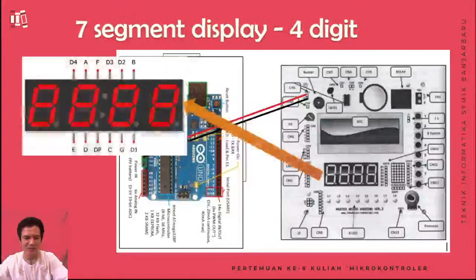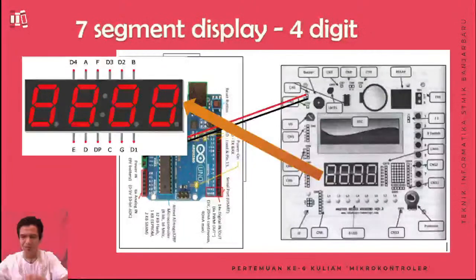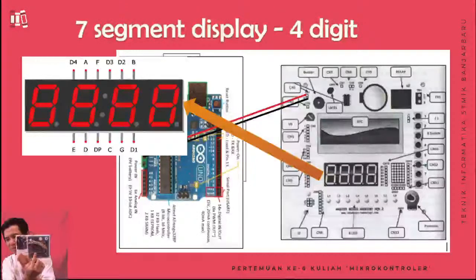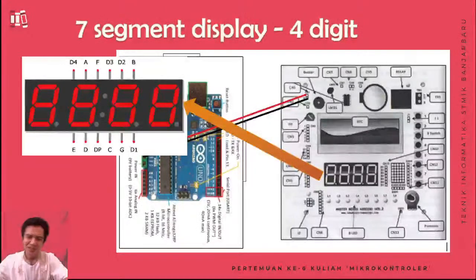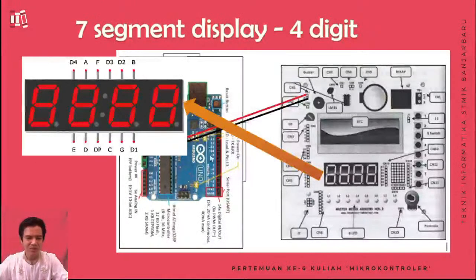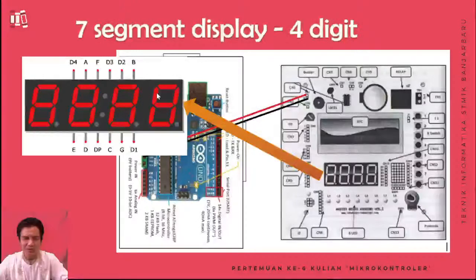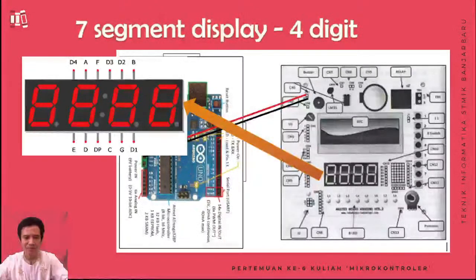Saya juga mengingatkan, display 7 segment itu ada di modul yang ada di kampus ini. Display ini ada di bawah — nanti bisa dilihat di slide-nya. Kalau di-zoom lebih jauh, maka 4 digit display 7 segment itu kurang lebih seperti 4 digit. Yang kebetulan terpasang di modul ini adalah yang common anode — jadi ingat kemarin common anode itu seperti apa teorinya.